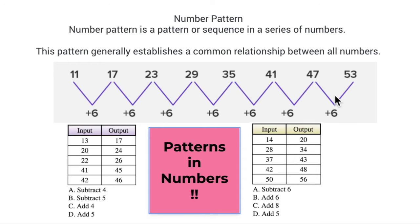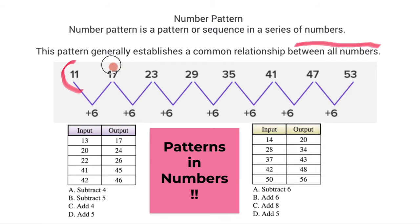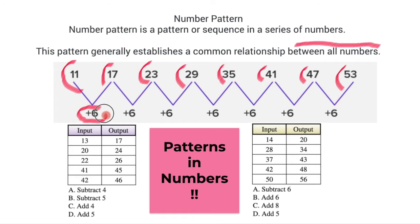This pattern generally establishes a common relationship between all numbers. For example, we have 11, then it jumps to 17, 23, 29, 35, 41, 47, and 53. What is the pattern here? You can see it here with this plus 6 — it means the relationship between one number and the next is a sequence of 6.